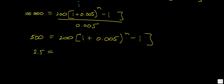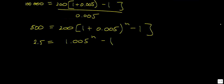Because the 200 is gone, I no longer need the outer brackets. I now have 1 plus 0.005, which I can simplify to 1.005, all raised to the power of n, minus 1. Noticing the like terms, I add 1 to both sides of the equation, leaving me with 3.5 is equal to 1.005 raised to the power of n.